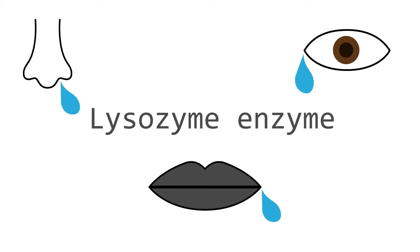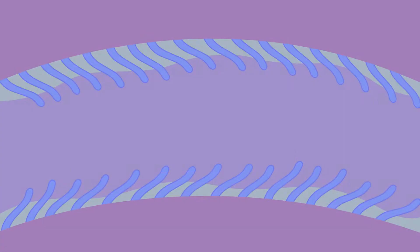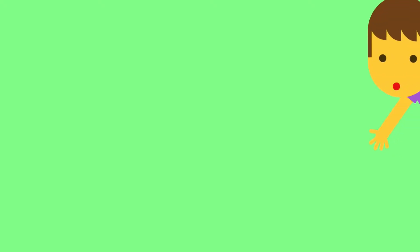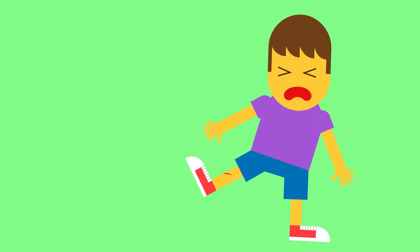Our respiratory system has many lines of defense as well as enzymes. Firstly, nasal hair keeps out dust and lodges organisms. Then, for the sneakier microbes that get through, there's sticky mucus which traps them, and little hairs called cilia sweep out the dirty mucus. Luckily, our blood has its own defense mechanisms.